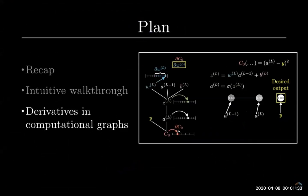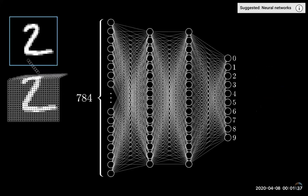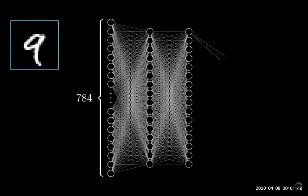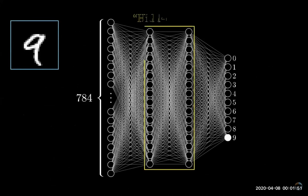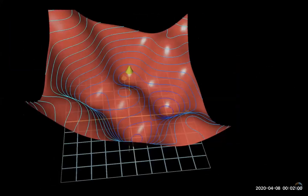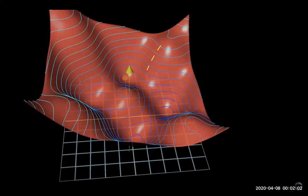If you watch the last two videos, you know what a neural network is and how it feeds forward information. We're doing the classic example of recognizing handwritten digits whose pixel values get fed into the first layer of the network with 784 neurons. I'm also expecting you to understand gradient descent as described in the last video.